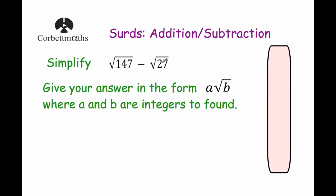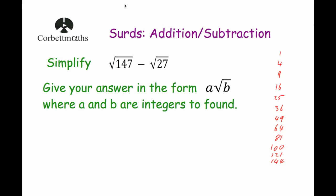So Root 27 — let's look for the largest square number that's a factor of 27. Going through our square numbers: 25, no; 16, no; 9, yes — 9 times 3 is 27. So I'm going to write Root 27 as Root 9 times Root 3. The square root of 9 is 3, so that's 3 Root 3. So Root 27 is 3 Root 3.